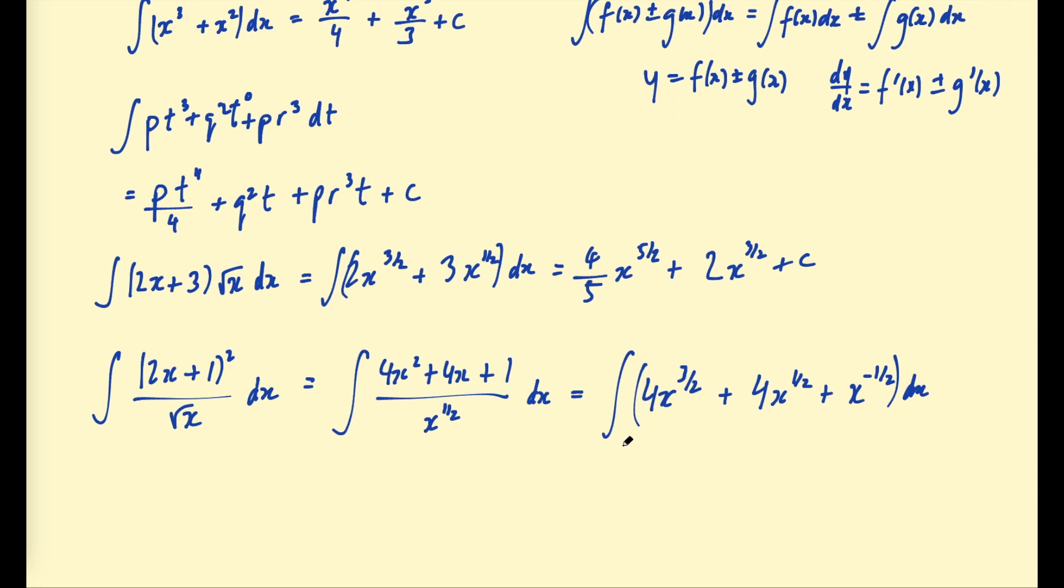So now we just find the integral of each term separately. So adding 1 to the 3/2 is 5/2, and then multiplying by 2/5, we get 8/5 x to the 5/2. Plus 1 to the half is 3/2. Multiply by 2/3, we get 8/3 x to the 3/2. And adding 1 to negative 1/2 gives us positive 1/2. Dividing by 1/2 is the same as multiplying by 2. So we get 2x to the power of 1/2 plus c for that final indefinite integral there.